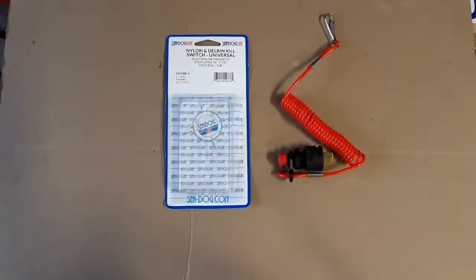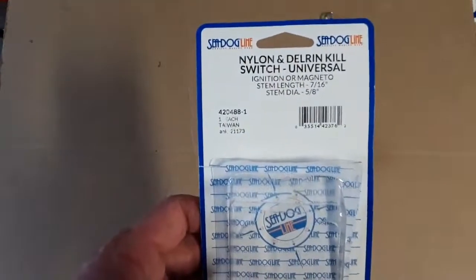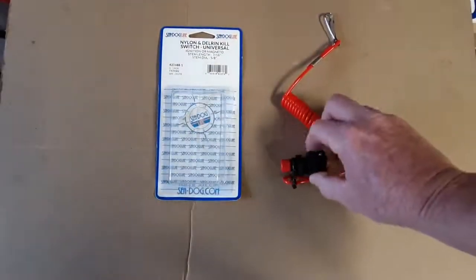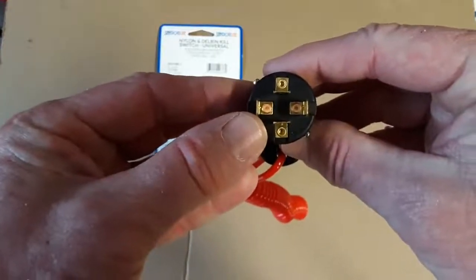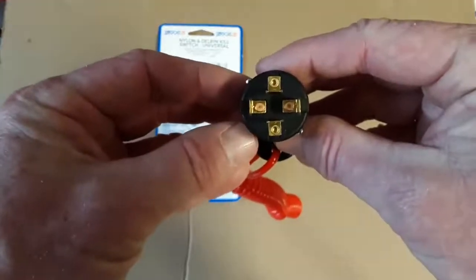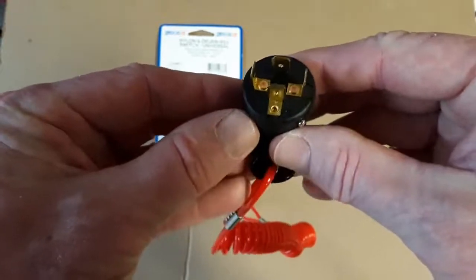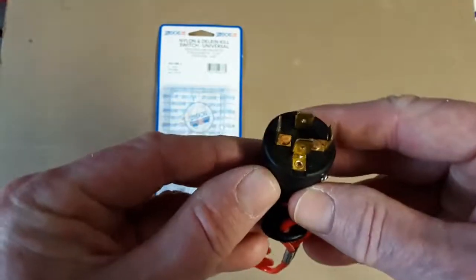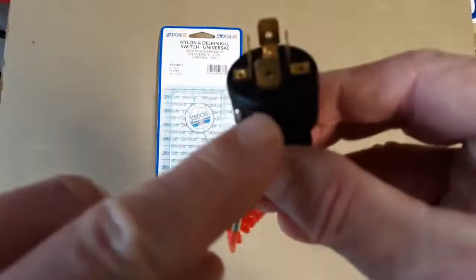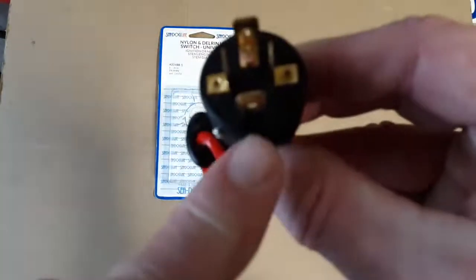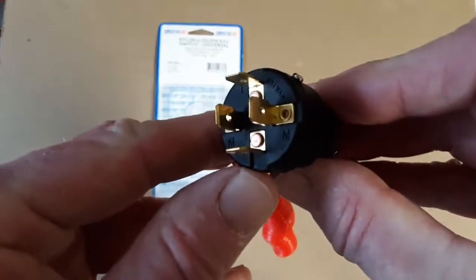It's a C-Dog universal kill switch right here, got it off Amazon, and it's going to have two sets of markings opposite each other. You're going to have an M and an I. The M is for magneto and the I is for ignition. I'm going to use the I settings, and how I could tell that I'm using the same ones on this is that for the I's there's little indentations on here that you can match up so you know you're using the right one. There's a better look right there.